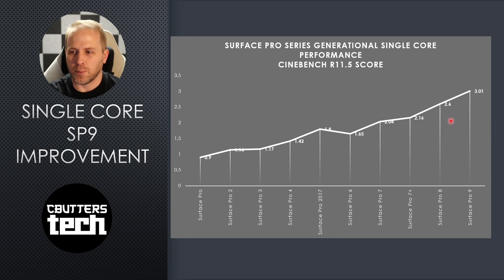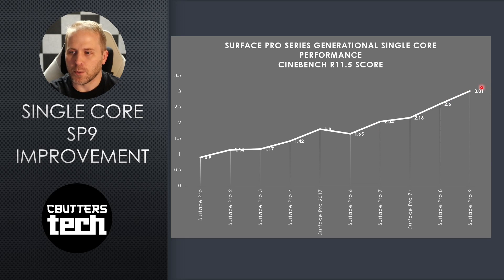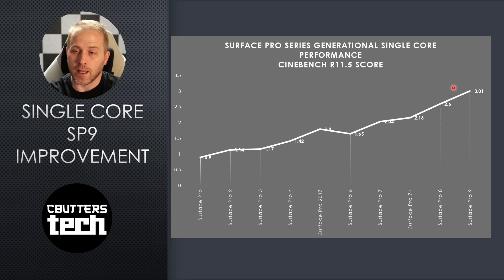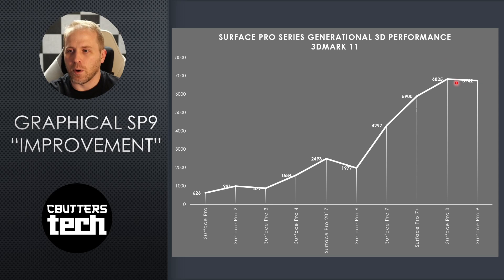Single core shows a pretty linear improvement — it bumped up just a little bit on Surface Pro 9 to 3.01. That's a pretty good, on-par-with-previous-generation improvement. Nothing amazing on single core, but that multi core result is really drastic. Let's look at 3DMark 11.